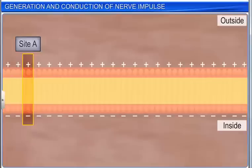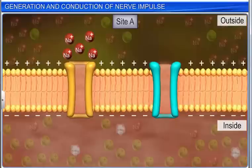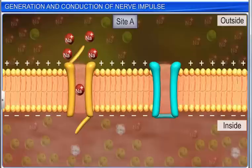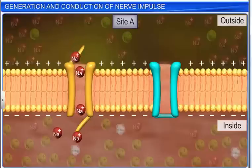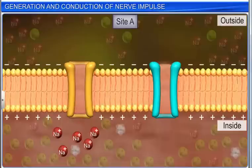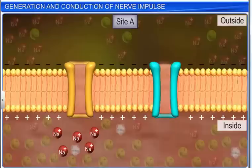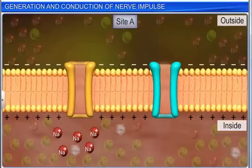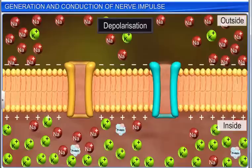When a stimulus is applied to a site, say A, on the polarized membrane, the sodium ion channels open and the membrane at the site becomes freely permeable to sodium ions. This leads to a rapid influx of sodium ions that reverses the polarity of the site — the outer surface of the membrane becomes negatively charged and the inner surface becomes positively charged. This reversal of polarity across the two sides of the membrane is called depolarization.